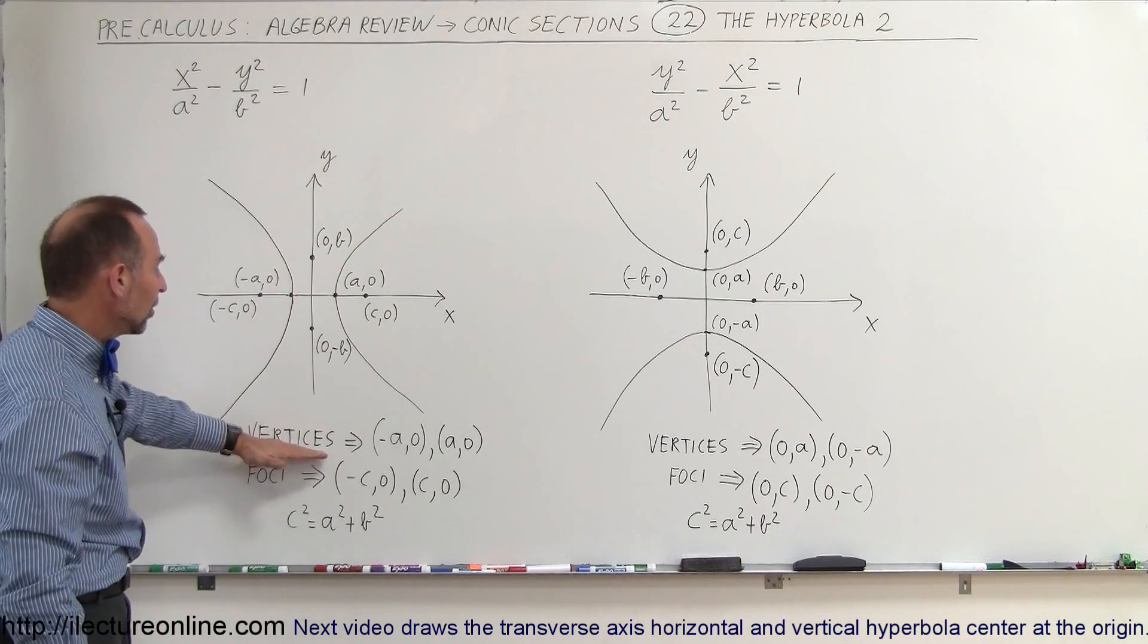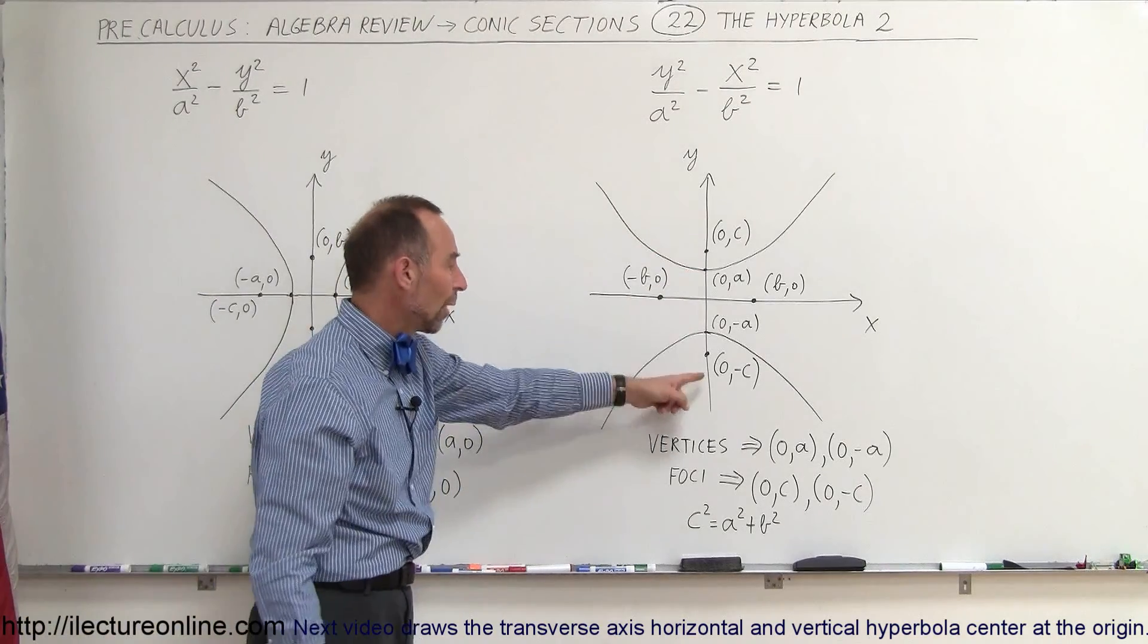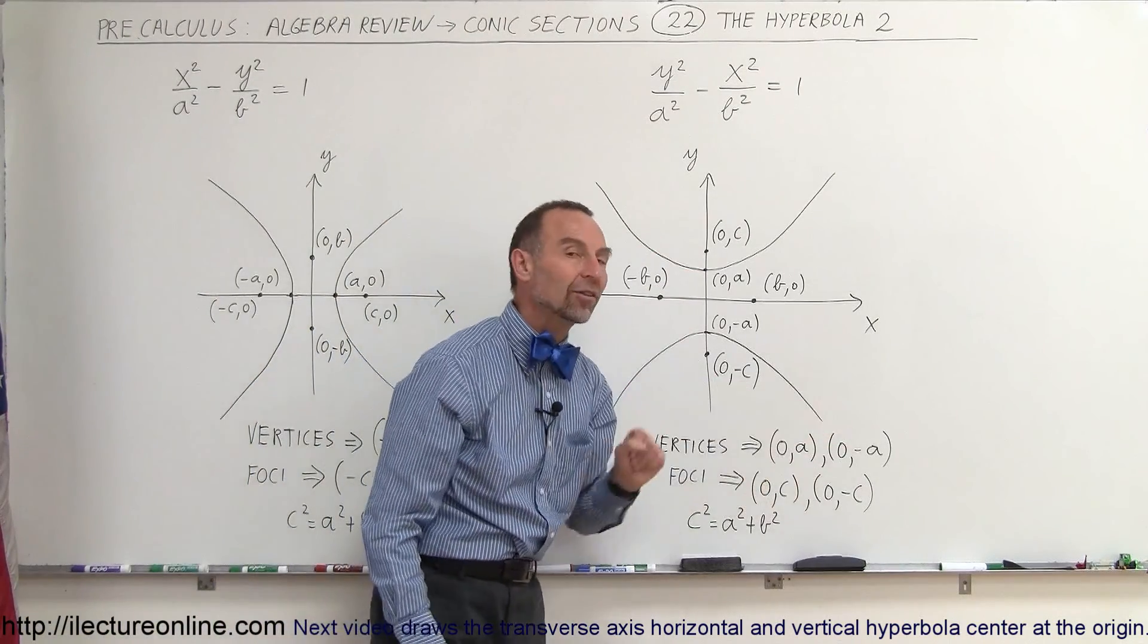So anyway, the vertices here is at minus A, 0 and A, 0 because it's on the x-axis. Here the vertices are on the y-axis, so it's 0, A and 0, minus A.